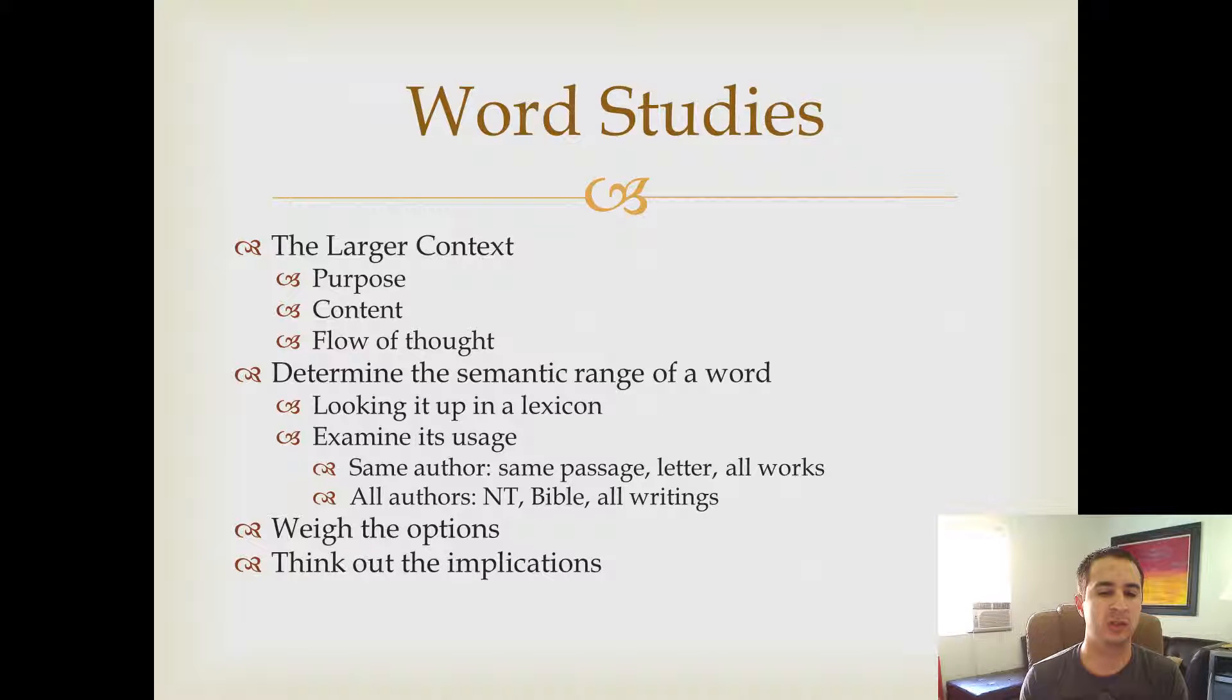Then you ask yourself, okay, here are two or three really good possibilities of what the author is meaning by this word. Carefully think out the implications that using each word has. So for example, if one word can mean, and the example I'm going to use when we actually work through one of these is the word destruction. The word destruction, for example, could mean to lose, to like lose, like forget where something is. It could mean to destroy something, like annihilate. It could also mean to ruin or corrupt or even to morally corrupt.